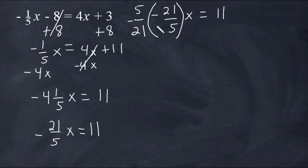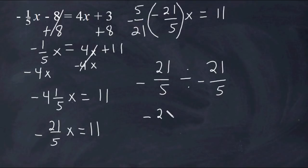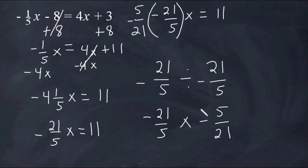We have to remember that this improper fraction is being multiplied by x. When you're multiplying, you are supposed to divide. However, multiplying a fraction by its own reciprocal is the same thing as dividing it by itself. Because remember the rule: keep, change, flip. If we were to take negative 21 fifths and divide it by itself, that should give us positive 1, because anything divided by itself is positive 1. Two negatives multiplied make a positive, and everything cancels out to equal 1.